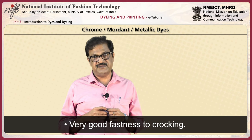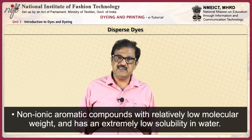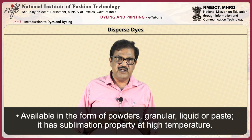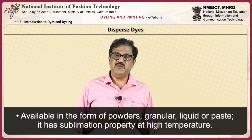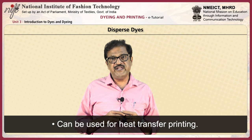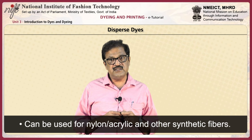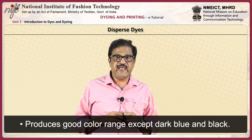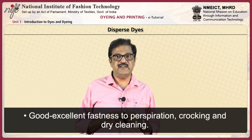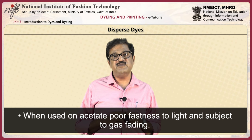Disperse dyes: these are non-ionic aromatic compounds with relatively low molecular weight and extremely low solubility in water. They are available in the form of powders, granular, liquid, or paste. They have sublimation property at high temperature. Dyeing is carried out at high temperature and pressure. They can be used for heat transfer printing. Effective for polyester, acetate, and triacetate. They can also be used for nylon, acrylic, and other synthetic fibers. They produce a good color range except dark blue and black. Good to excellent fastness to perspiration, crocking, and dry cleaning. Fair to good fastness to light and washing. For acetate fibers, poor fastness to light and subject to gas fading.